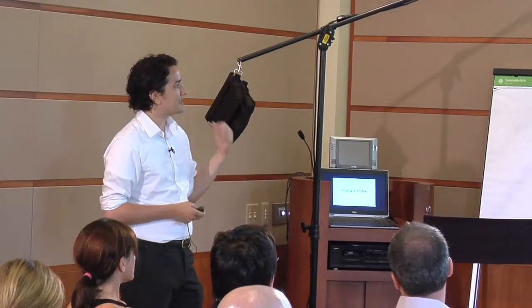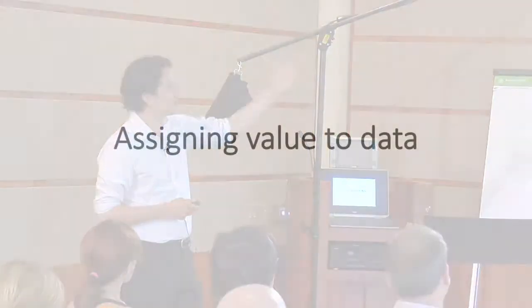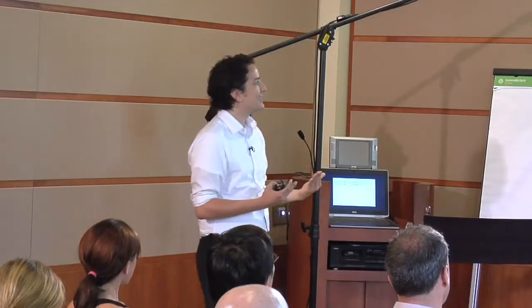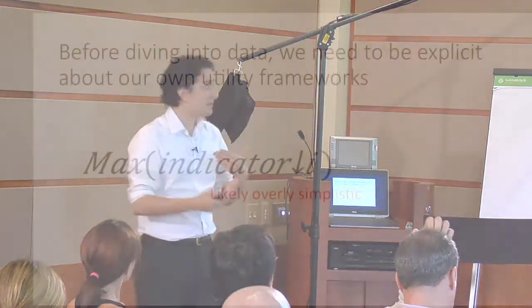So how do we deal with this? The way we approach this is what I talk about as assigning value to data — before diving into the data, we need to be explicit about our own utility frameworks. What I mean by a utility framework is the way that we ascribe value to data points, to these outcomes metrics. The examples we've been looking at use very simplistic utility frameworks where you're simply maximizing one particular indicator. This is overly simplistic.